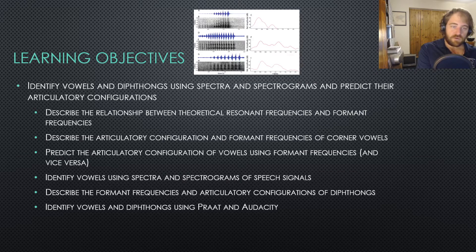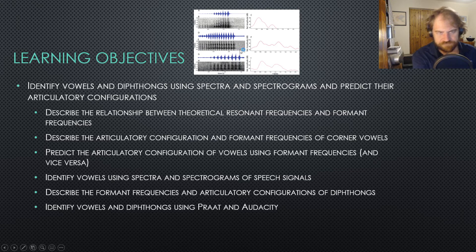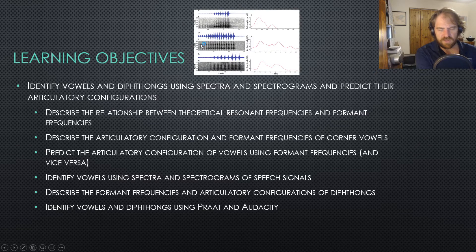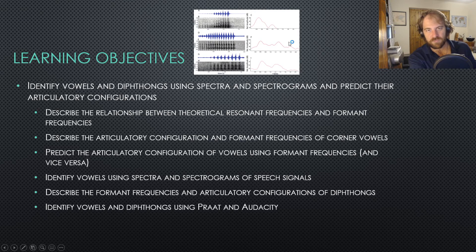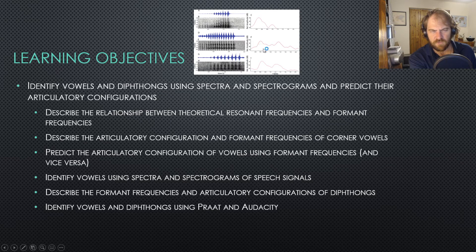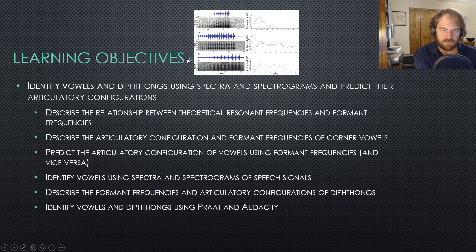A spectrogram has time as part of the representation, so we can see what's going on over time going this way, and then we've got frequency going this way. The darker it is, the more energy that's in that band. And then a spectrum — or multiple of them is spectra — is just showing us the frequency representation and the amplitude of all those frequencies. So spectra here, spectrograms here.